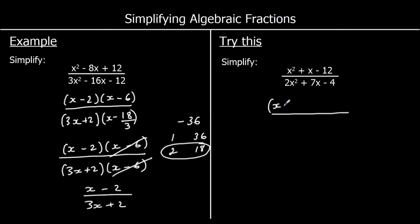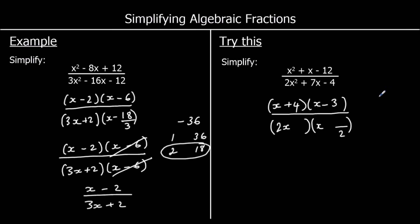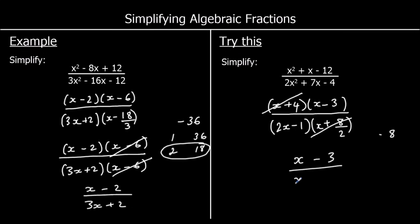So let's factorise the top — x in both sets of brackets, x times x makes x squared. What multiplies to make negative 12 and adds to make 1? It'll be plus 4 and minus 3. For the bottom, we want 2x squared, so I'll write 2x in one bracket and x in the other, with over 2. Using a times c: 2 times 4 makes 8. What multiplies to make 8 and adds to make 7? It's minus 1 and plus 8. So 8 over 2 is 4, giving x plus 4 on the bottom and x plus 4 on the top — cancel them off, which leaves x minus 3 over 2x minus 1.